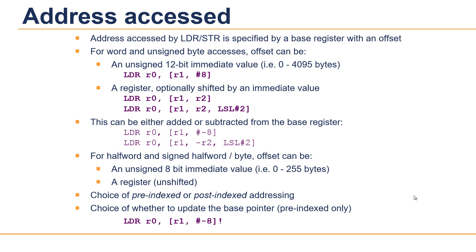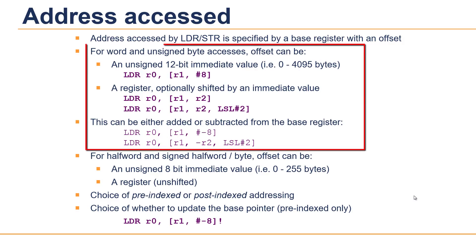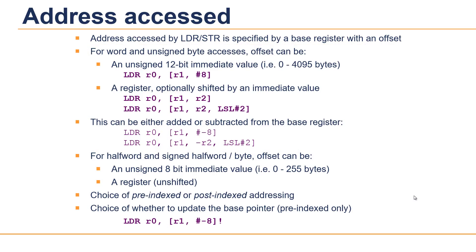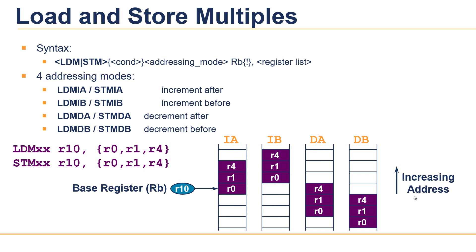Now let's take an example of load and store instructions. The address accessed by LDR or STR is specified by a base register with an offset, and this offset can be given directly as an immediate value or specified with a shift operation using a barrel shifter. Here we are loading R0 from the address R1 plus 8, meaning the value R1+8 becomes the effective address. R0 can also be loaded with the address generated by R1 plus R2, where the barrel shifter first shifts R2, then the ALU adds this to R1, and the result becomes the effective address for loading R0.